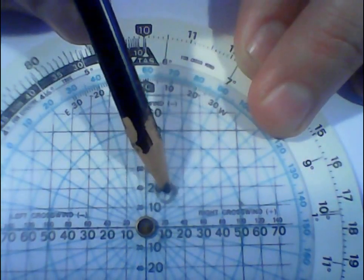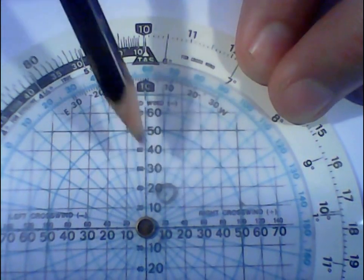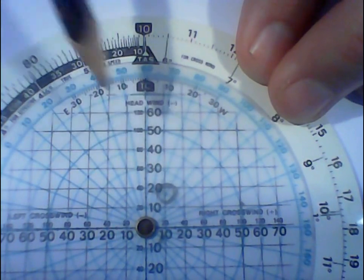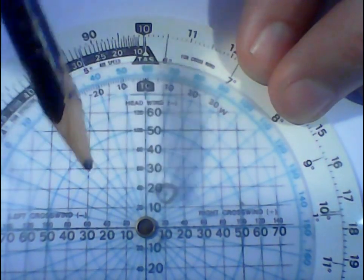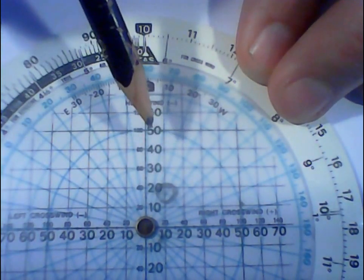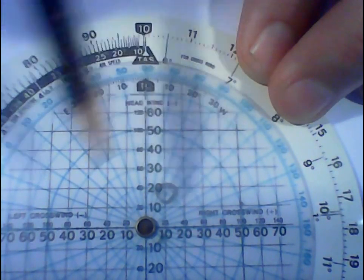We've got 16 knots of headwind. So our ground speed is going to be 84 knots, but what about how much do we need to adjust for that wind that's coming from our right?